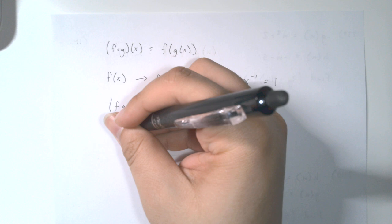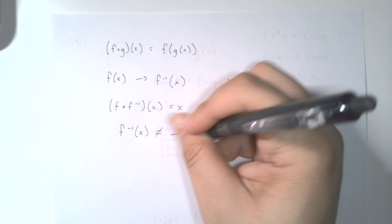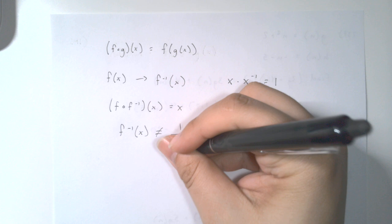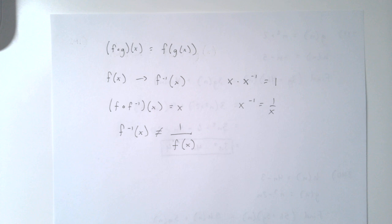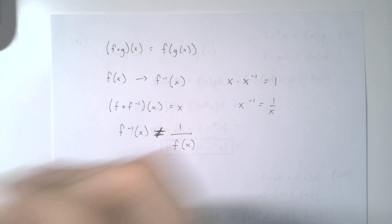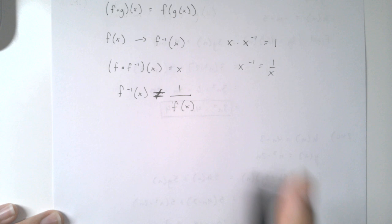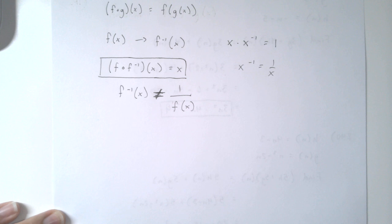However, it should be noted that inverse of f of x is not equal to 1 over f of x — make this very clear, they are not equal to one another. It's just a notation, and for now that's really all you need to know about this. This is the property we're going to use for the first example. The rest of them I'll show you how to do with the calculator without having to do any algebra.